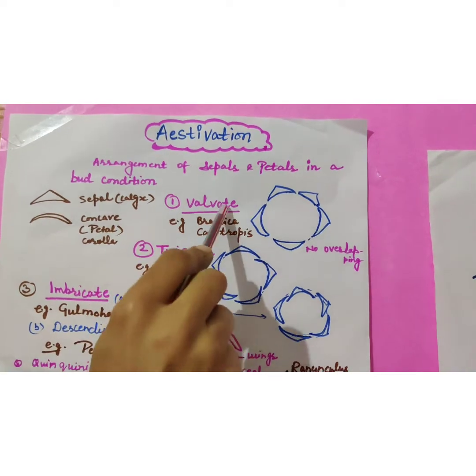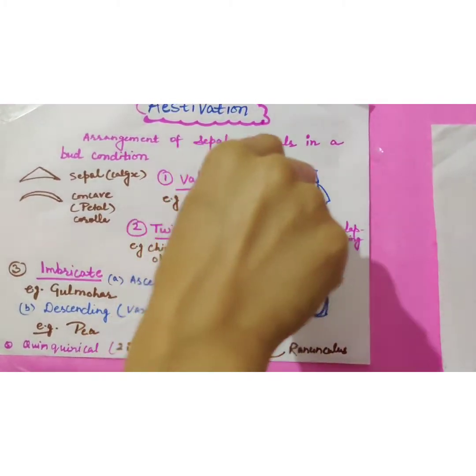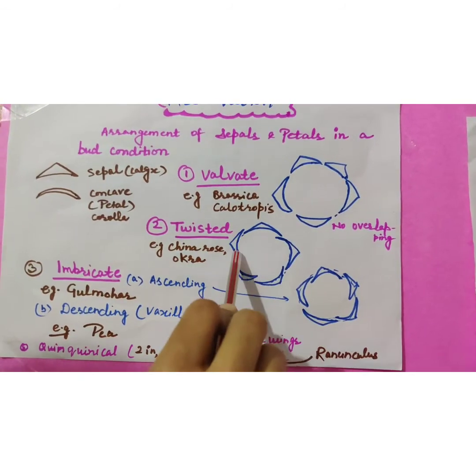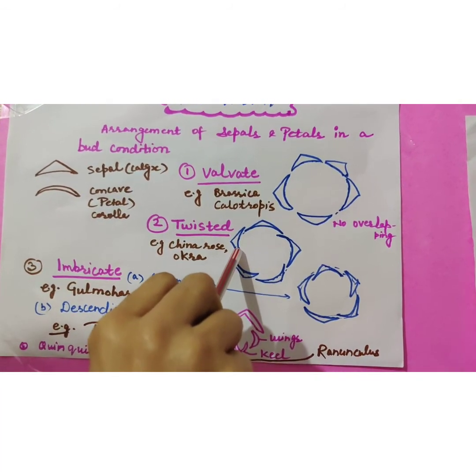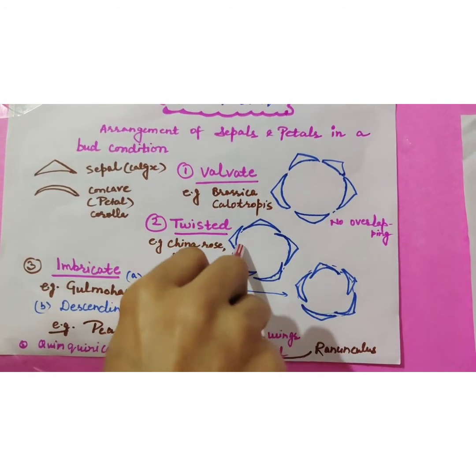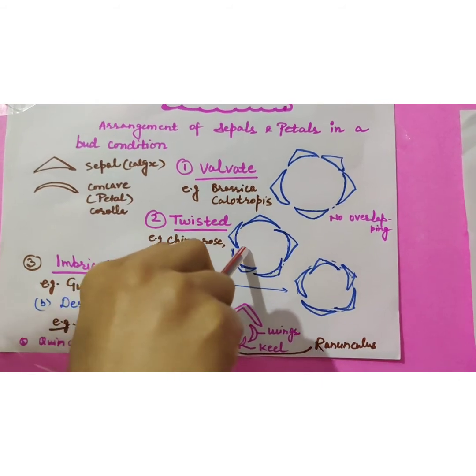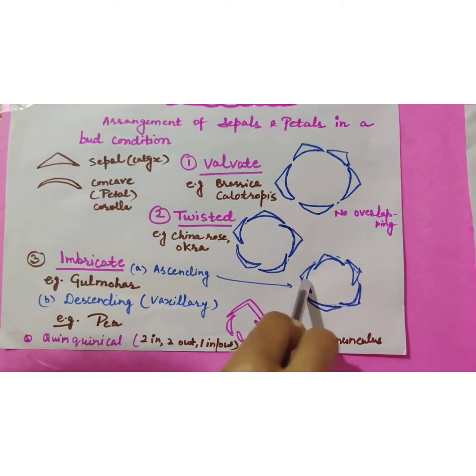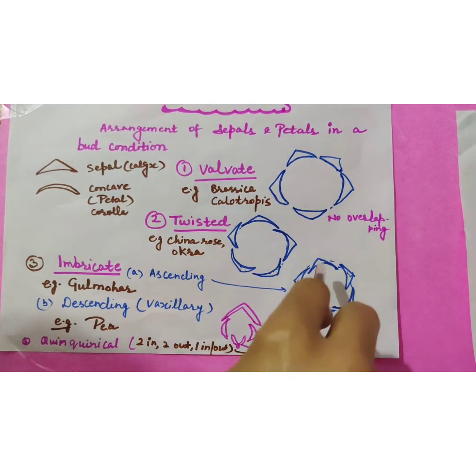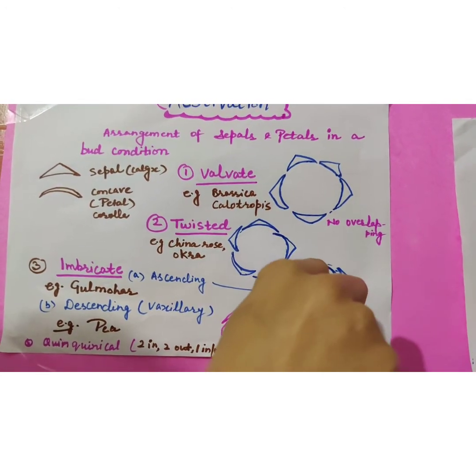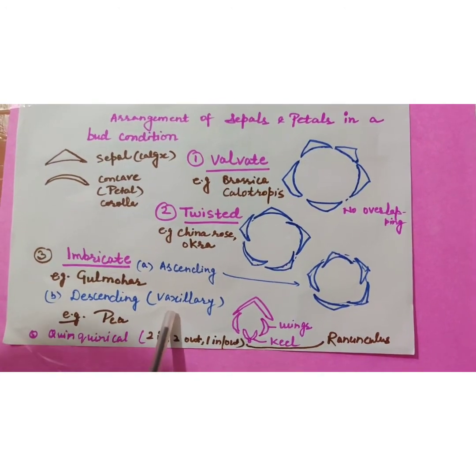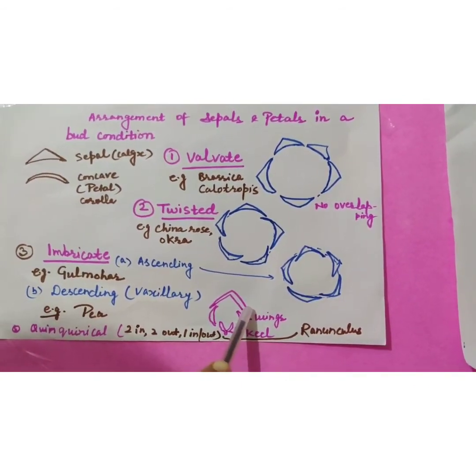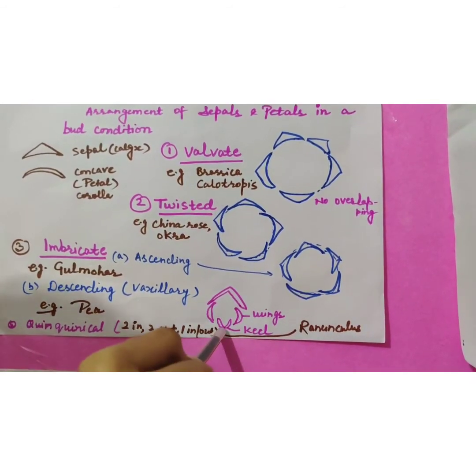So how many types of aestivation we studied? Valvate, in which all the sepals or petals they are arranged in orderly manner. No overlapping is there. In case of twisted aestivation that is the second type, sepals or petals they are present in orderly manner. There is overlapping. What in orderly manner? One end free, one end overlapped by another sepal or petal. Third type is imbricate which is of two types ascending, descending. In ascending we find that one completely in, one completely out and three are with one end in, one end out. And in descending which is also called vexillary, it is present in pea flower. One petal is very big in size which overlap the next two and those next two overlap the innermost one. Together that is called keel.